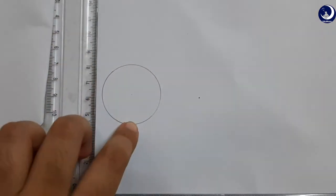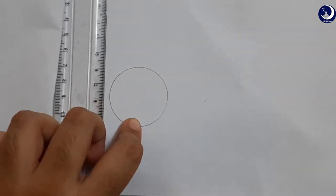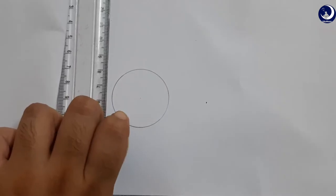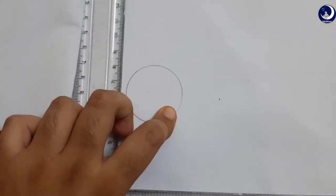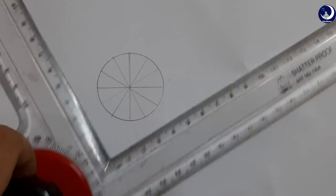Now we have to divide this circle into parts. So this is 90 degrees, again 90 degrees, 30 degrees, 60 degrees, and again 30 degrees, 60 degrees. So I divided the circle into 12 equal parts.